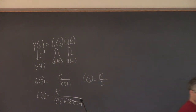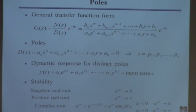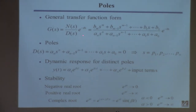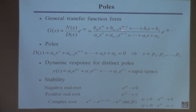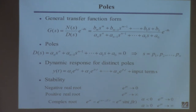We can write transfer functions. Generically we'll write transfer functions in this form — this is the most general form we'll be interested in. We have a numerator polynomial in S, and the order of that polynomial is M. For all the problems we've considered so far, this is just a constant, but in general it could be some power of S. We have a denominator polynomial, that's power N, and you can see that corresponds to the order of the system. The coefficients A's and B's are known constants in the context of any particular problem.